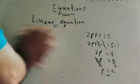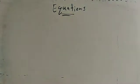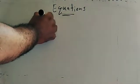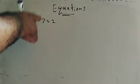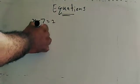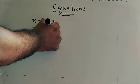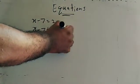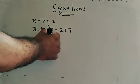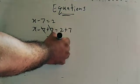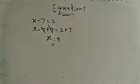These are the linear equations. Also, x minus 7 is equal to 2. How can we simplify? To cancel minus 7, add plus 7 to both sides. Then minus 7 and plus 7 cancel, leaving x. Two plus 7 equals 9. The value of x is 9.